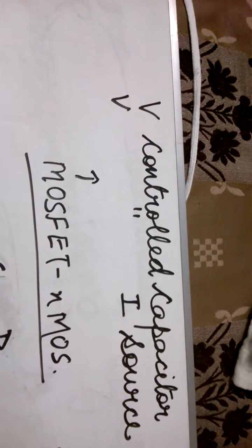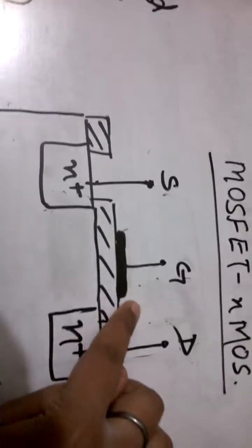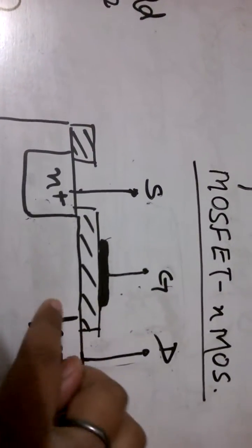Generally the general terminology is asked for MOSFET. So MOSFET can also be known as the voltage controlled capacitor or a voltage controlled current source. Voltage controlled capacitor, you can see this is a metal plate and this can be assumed as a semiconductor plate.